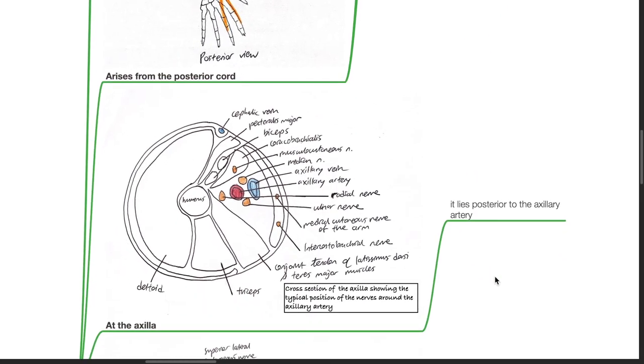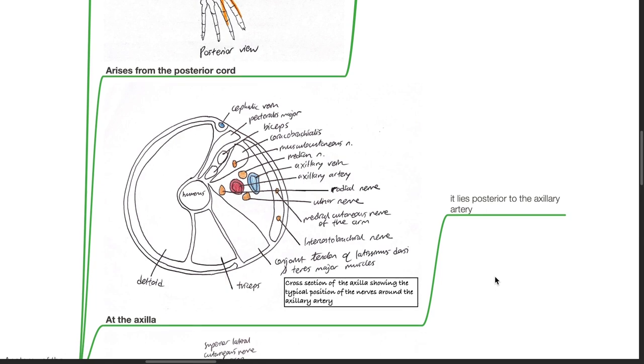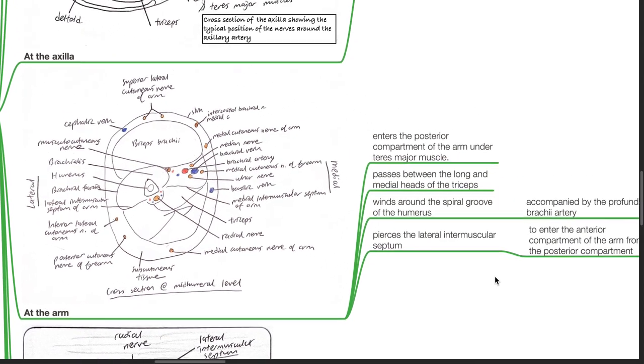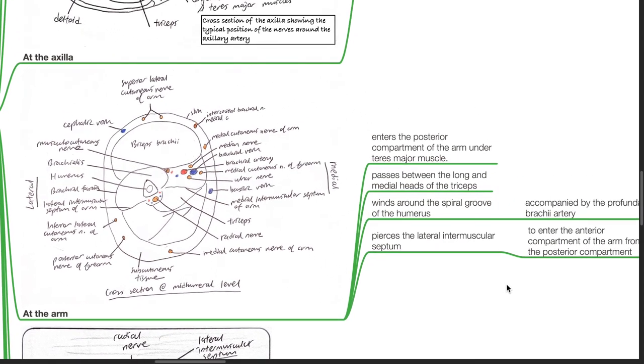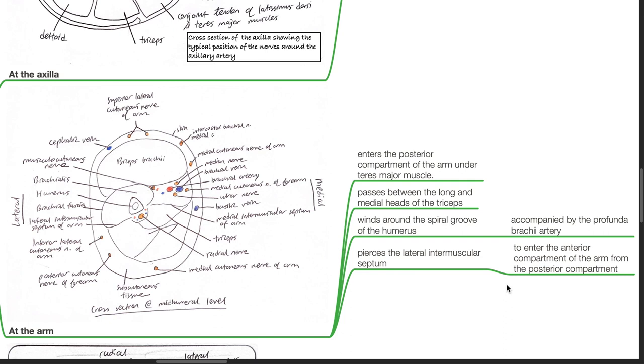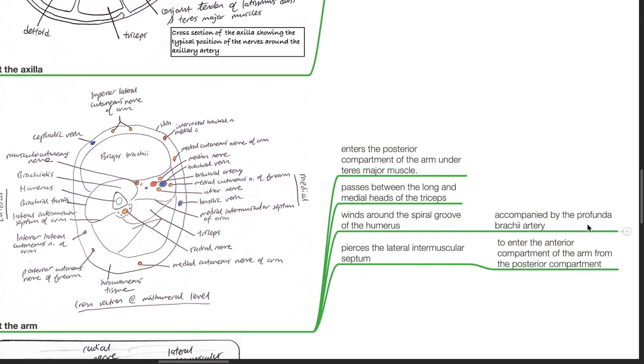At the level of the axilla, the radial nerve lies posterior to the axillary artery. At the level of the arm, it enters the posterior compartment of the arm under the teres major. It passes between the long and medial heads of the triceps and winds around the spiral groove of the humerus. It is accompanied by the profunda brachii artery. It pierces the lateral intermuscular septum to enter the anterior compartment of the arm from the posterior compartment.